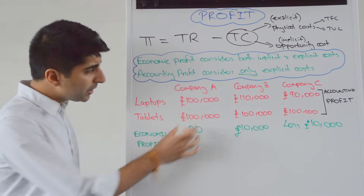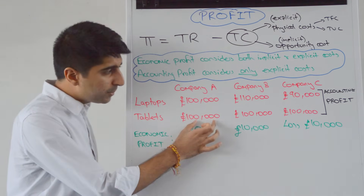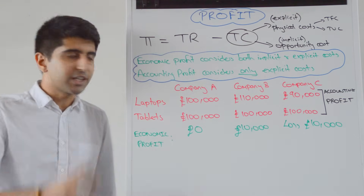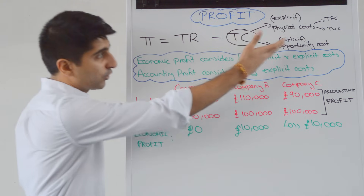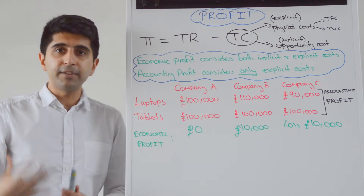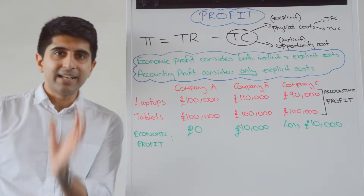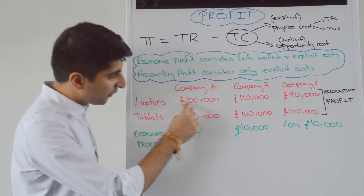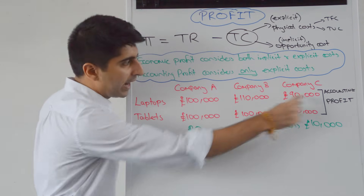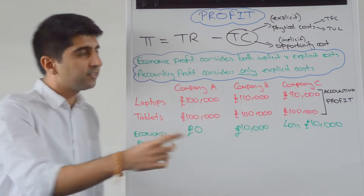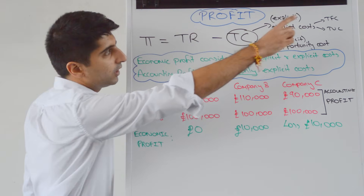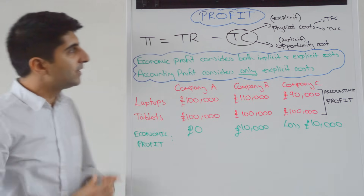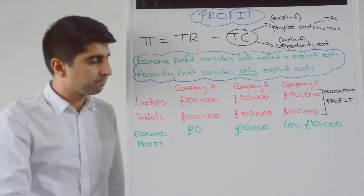That is because the opportunity cost needs to be taken away in each case. For an economist, that is a cost — an implicit cost that needs to be factored in to the profit equation. Whereas for an accountant, you just take into account the physical cost, the fixed and variable cost, taking that away from total revenue.